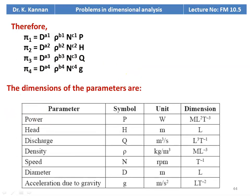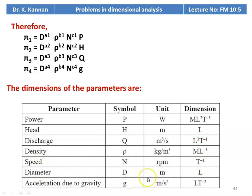The dimensions of different parameters: power p — watts, dimension ML²T⁻³; head h — meter, dimension L; discharge q — m³/s, dimension L³T⁻¹; density rho — kg/m³, dimension ML⁻³; speed n — rpm, dimension T⁻¹; diameter d — meter, dimension L; acceleration due to gravity g — m/s², dimension LT⁻².